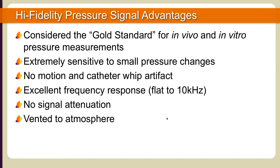A typical cath lab Microcath setup includes the use of a Millar TC510 control unit and cable accessories. It's important to note that the interface cable between the TC510 control unit and cath lab monitor will vary between manufacturers. The TC510 control unit allows for seamless interface to the cath lab's monitoring system and enables users to calibrate and zero-balance the catheter's signal after connection. The Microcath sensor does not require a pre-soak, so setup and calibration can be performed within minutes.